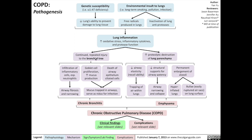Continued repeated injury to the bronchial tree involves a variety of mechanisms, such as infiltration of inflammatory cells — especially neutrophils — into the airways, resulting in airway fibrosis and narrowing. Goblet cells lining the bronchial tree mucosa proliferate, increasing mucus production, and the death of the airway epithelial lining's ciliated cells creates debris which, combined with the mucus, becomes trapped in the airways, serving as a nidus for infection.